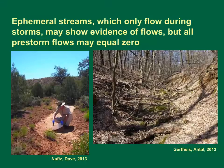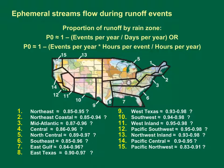Ephemeral stream beds, which only flow during storms, may show evidence of flows, but almost all pre-storm flows may be equal to zero for such locations, with the exception of runoff events in rapid succession. Synoptic precipitation statistics for runoff-generating events may inform the threshold between ephemeral and intermittent streams in different regions. Using the long-term average number of events per year, the fraction of zero flows may range from 0.83 in rain zone 15 in the northwest to 0.95 in rain zones 11 and 12 in the southwest. Using the long-term average number and duration of events, the fraction of zero flows may range from 0.91 in rain zone 15 to 0.98 in rain zones 9 through 13.